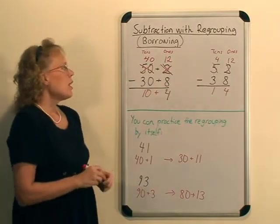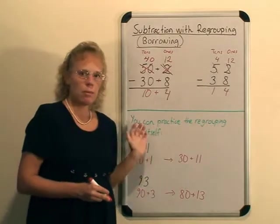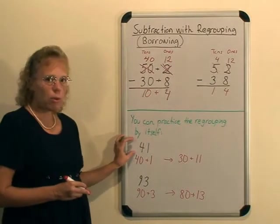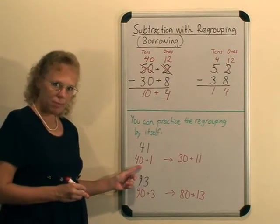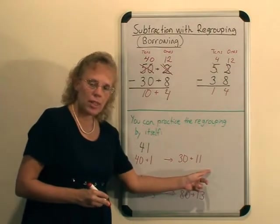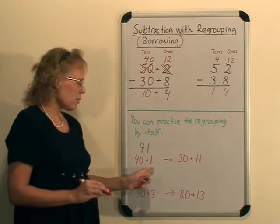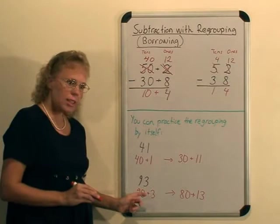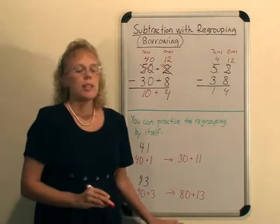But this notation makes it more transparent what is happening. If the child has difficulty with this, you can practice the regrouping part by itself. This part does not have any subtraction going on. All we do is take a number like 41 and write it with its tens and ones, then take 1 ten from the tens and move it to the ones so that 40 and 1 becomes 30 and 11.